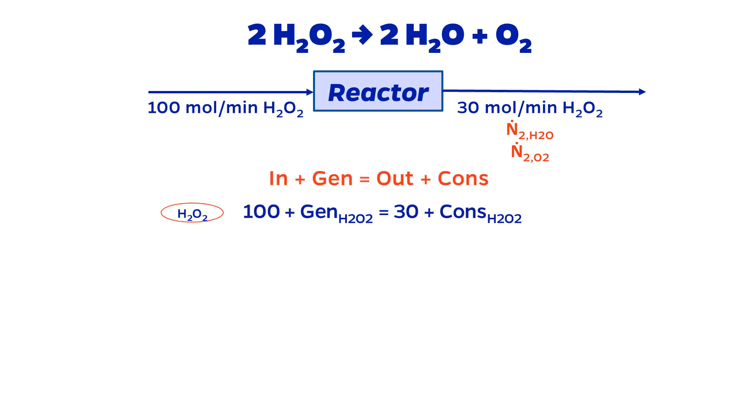The H2O2 balance is 100 moles per minute plus generation of H2O2 equals 30 moles per minute plus consumption of H2O2. Since the reaction is specified to be irreversible and H2O2 is a reactant, we can say that the generation of H2O2 is 0. Therefore, the consumption of H2O2 must be 70 moles per minute.